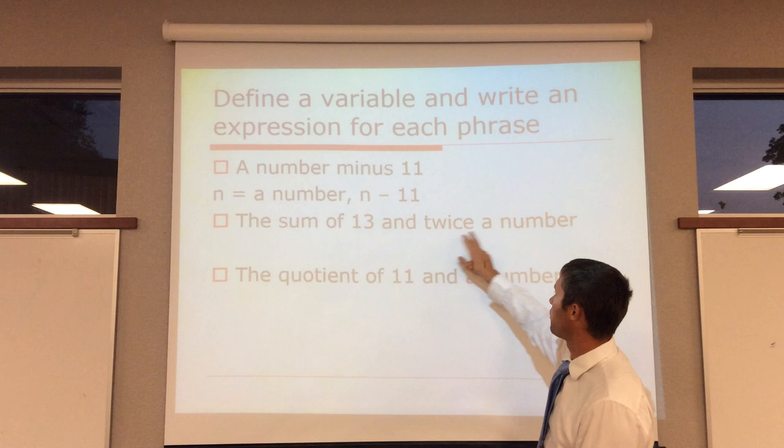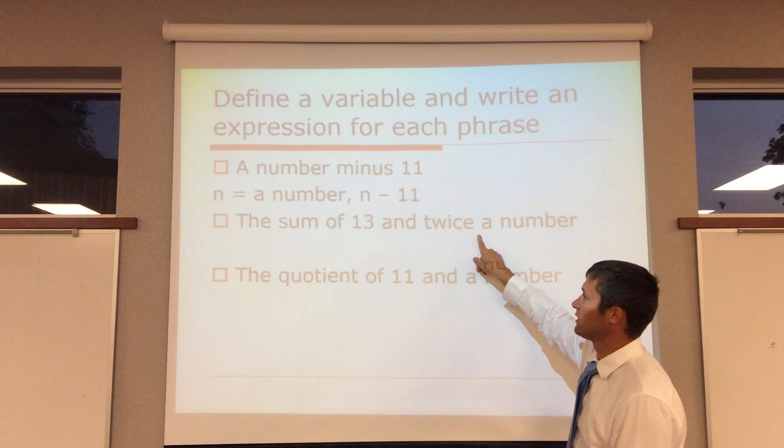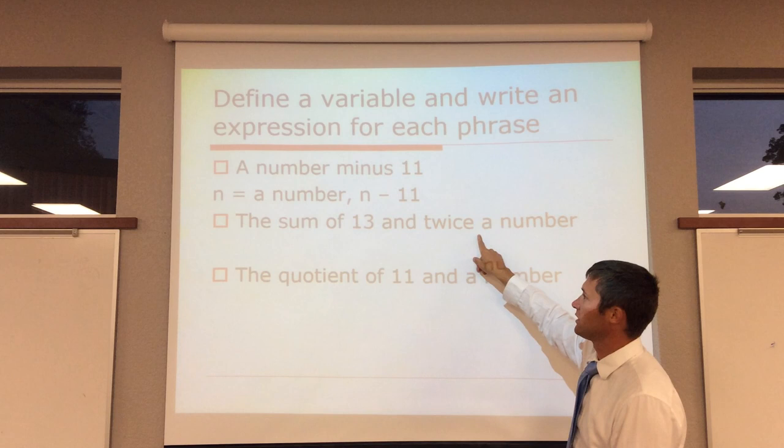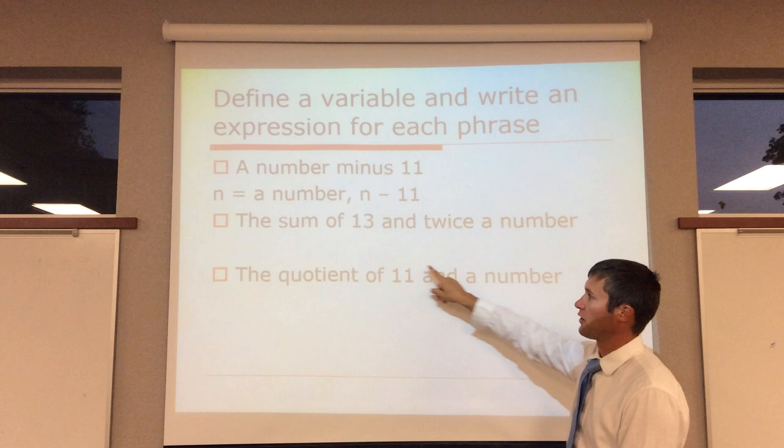The sum of 13 and twice a number. So, the sum means we're adding. So, 13 and twice a number. Twice means two times a number. So, we'd write an expression as 13 plus 2 times n. Now, what does n mean? Well, it just means a number. Some number.